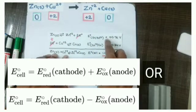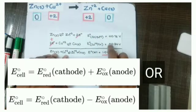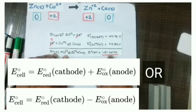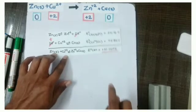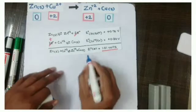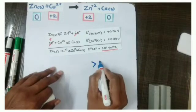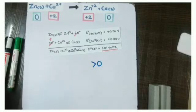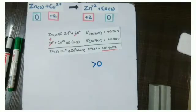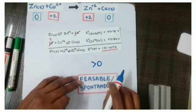Okay. And if you add these 2 values, then it will convert into 1.01 volts, which is a positive sign. And if this value is greater than 0, then the reaction is said to be feasible or spontaneous.